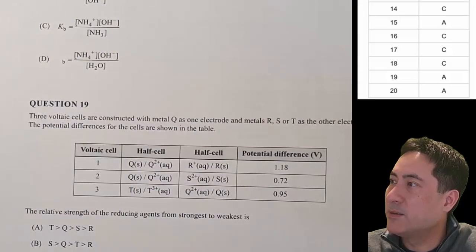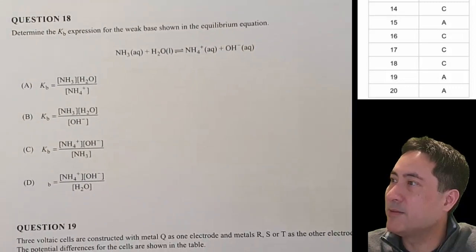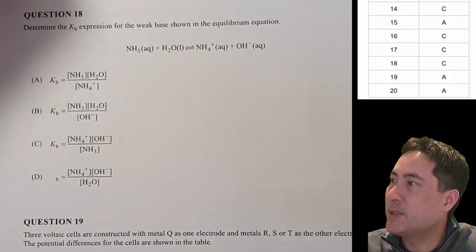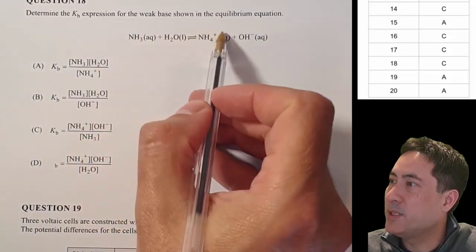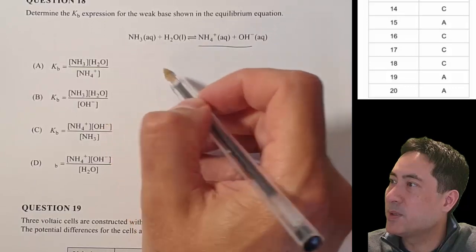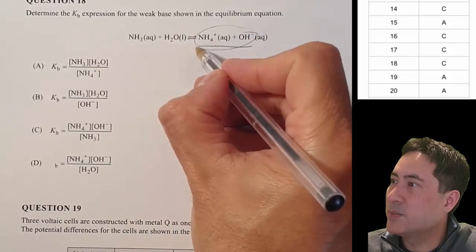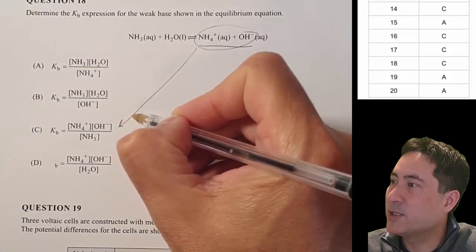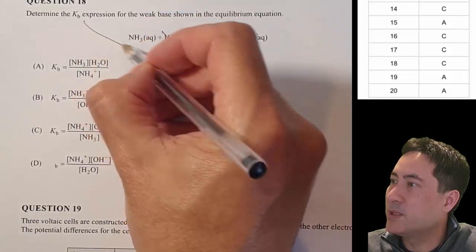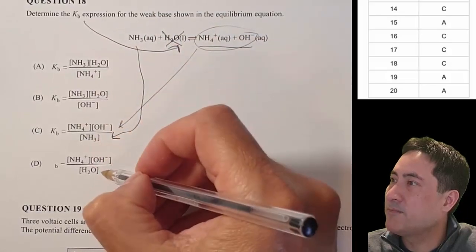Question eighteen: it looks like a horrible equilibrium one but they're just looking for the expression. That's nice and easy. Weak base — never has the water in it. Products over reactants, cross the water out. Reactants and products in the right places. Can't have water — those other things are all in wrong places. Question eighteen is C.